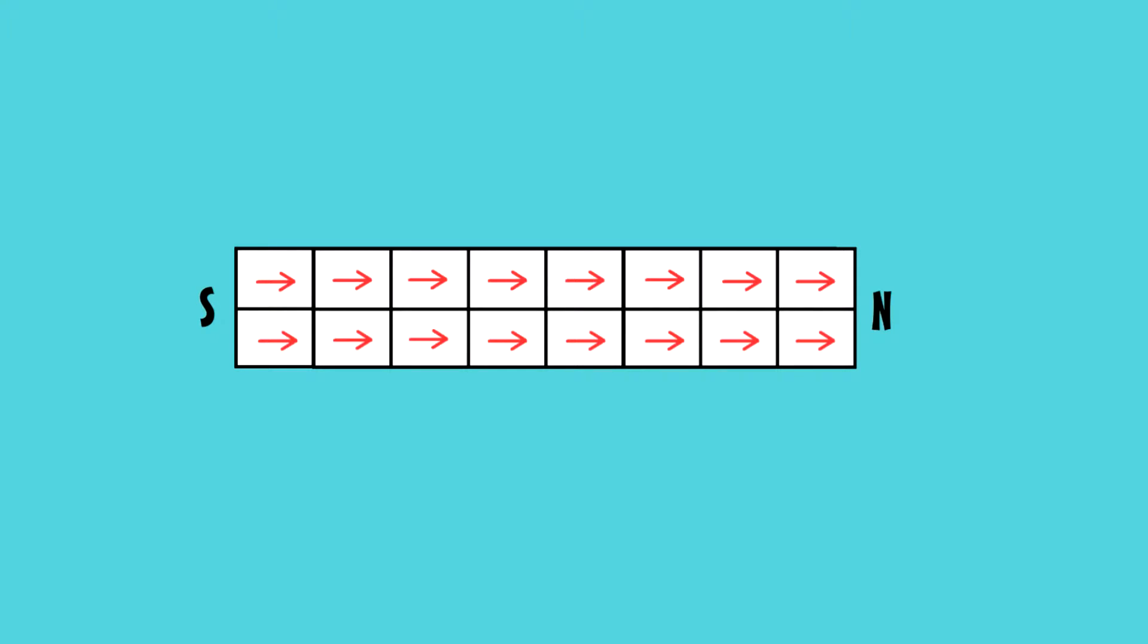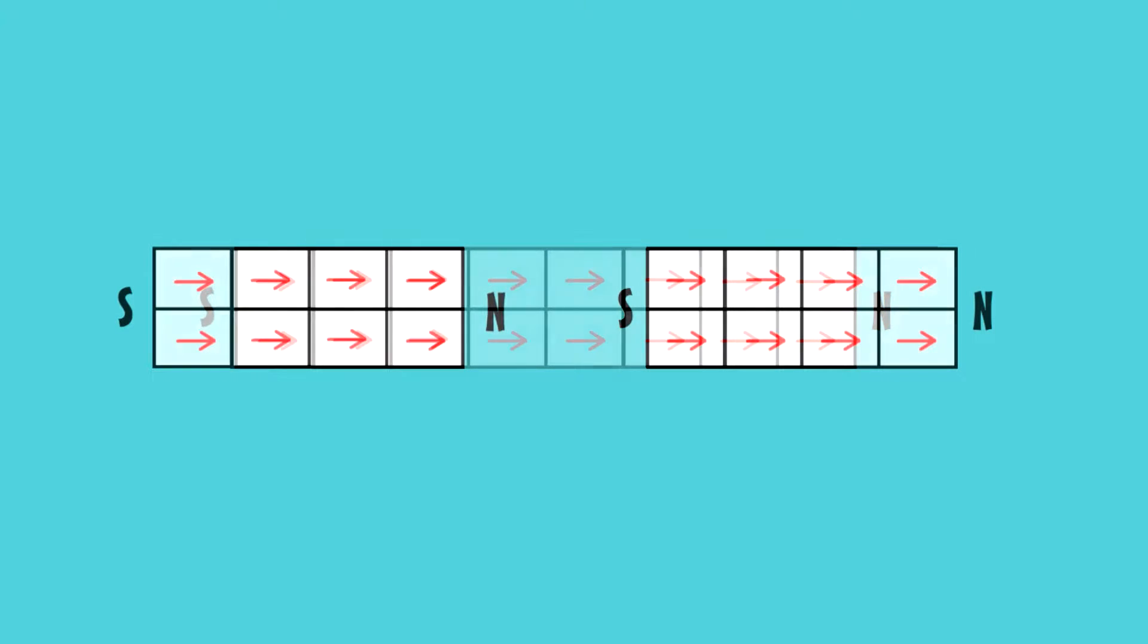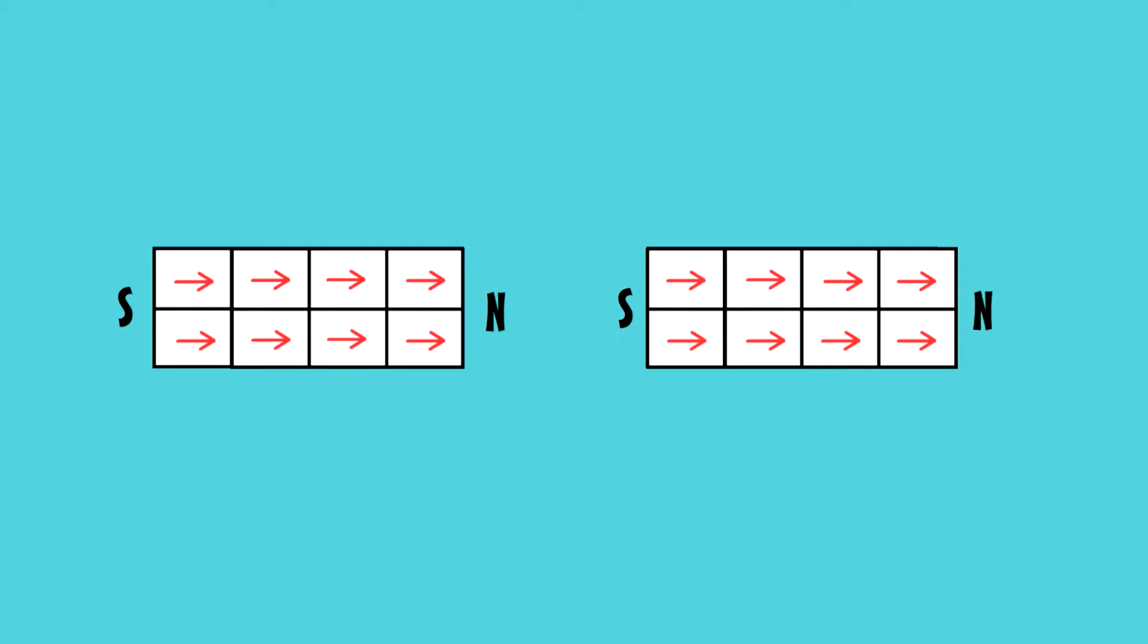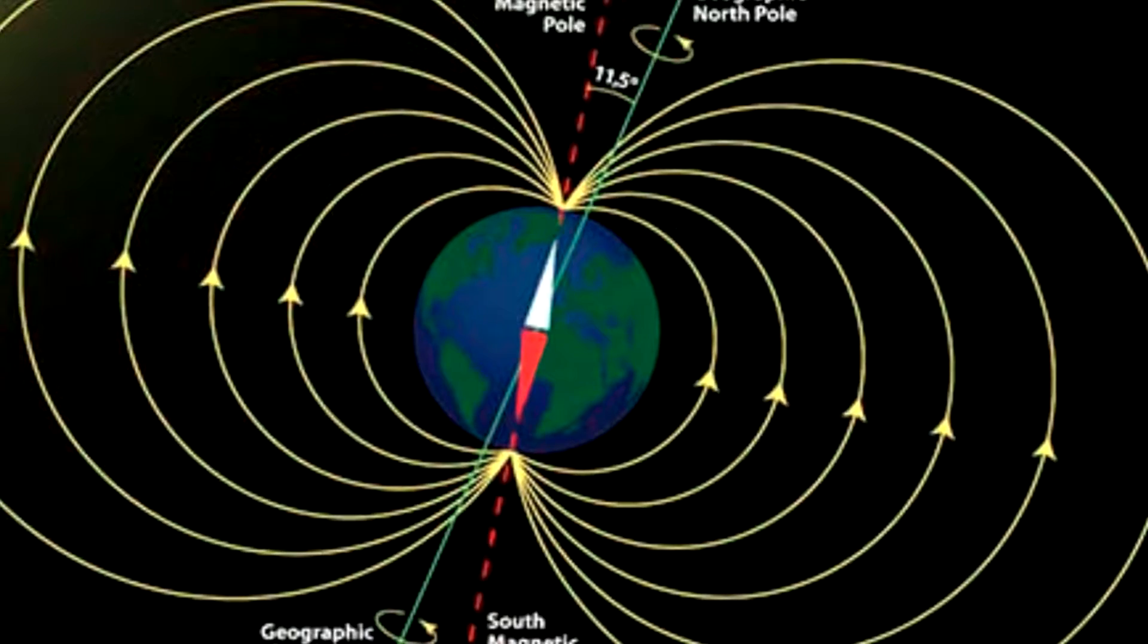When we have materials like this, we call them magnets. And they have a north and a south pole. And it's because of these domains and the electron spins, that's why when you break a magnet in half, you wind up with two magnets that also have a north and south pole.